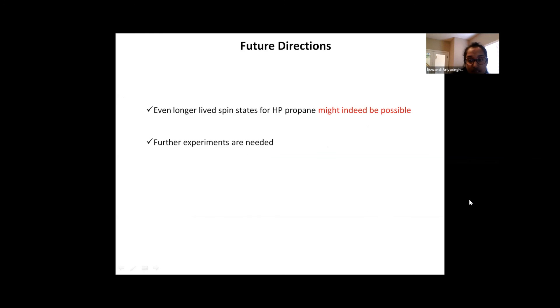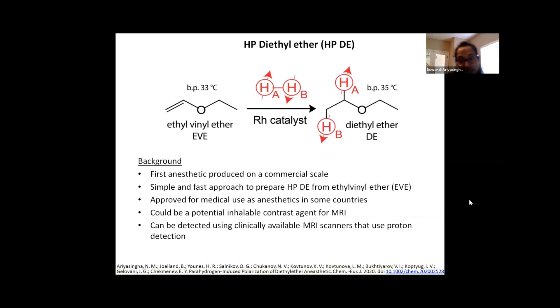So with that, I'd like to move into the third molecule, which is hyperpolarized diethyl ether that was produced by using EVE. So diethyl ether, as we all know, was the first anesthetic produced on commercial scale. Although it is no longer used in the United States due to flammability issues, it is still used as a medical anesthetic in some countries. So we think by making few developments, we will be able to use this as a potential inhalable contrast agent for pulmonary imaging.